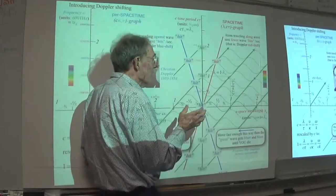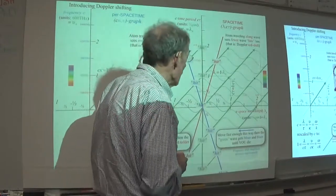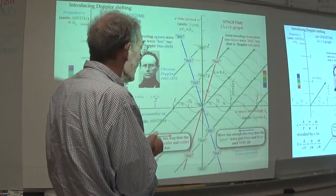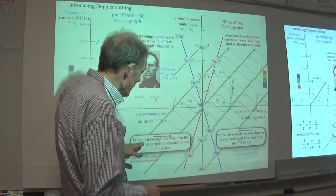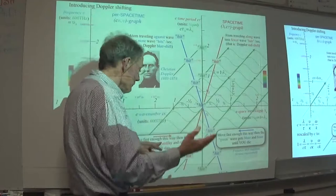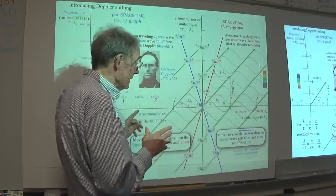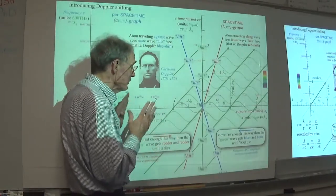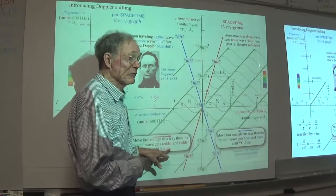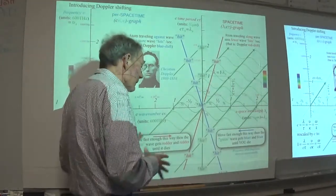If you move fast enough this way, the wave gets redder and redder - it drops out of the visible, red, and finally into radio. And while that's happening - it actually happens exponentially, something people don't realize - its amplitude also Doppler shifts down, because amplitude turns out to be frequency in this kind of business. The idea that this thing gets redder and redder until the wave dies is very important. Move fast enough the other way, and the wave turns into gamma radiation - super hyper gamma radiation that will fry everything that makes you up. These are two extremes of Doppler shift.